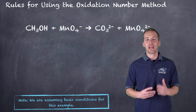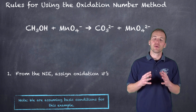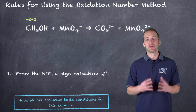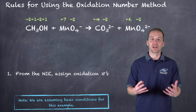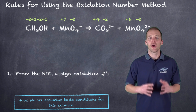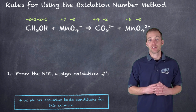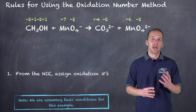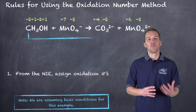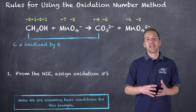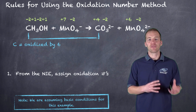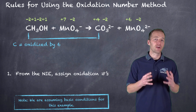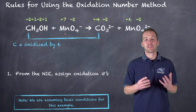Here's our example. The first step is to assign oxidation numbers — hopefully you've watched one of the previous vodcasts on this, or you're at least familiar with how they're assigned. What we really want to identify is what's being oxidized and what's being reduced. We can see that carbon is increasing in oxidation number from left to right, going from minus two to plus four — so carbon is being oxidized by a factor of six.